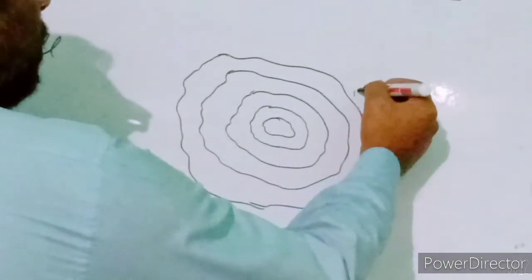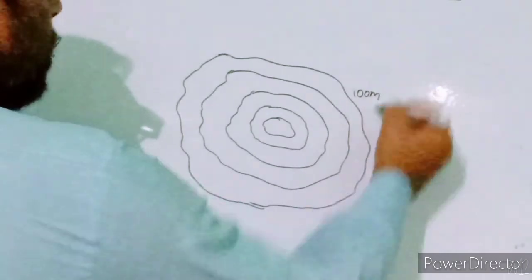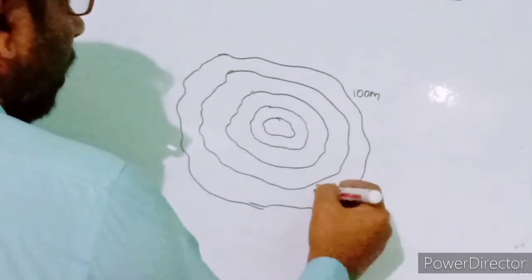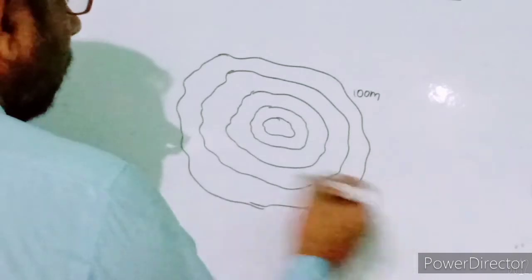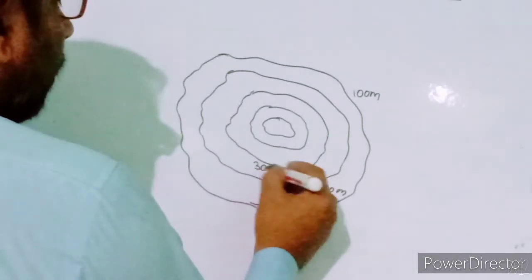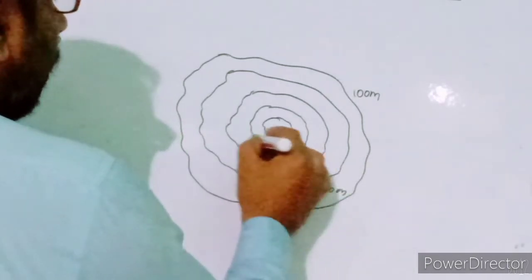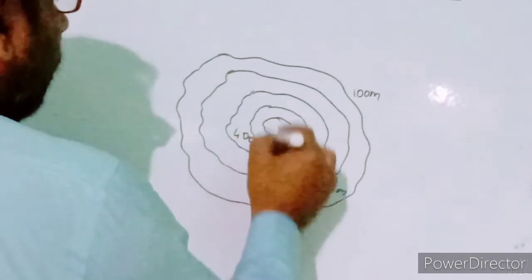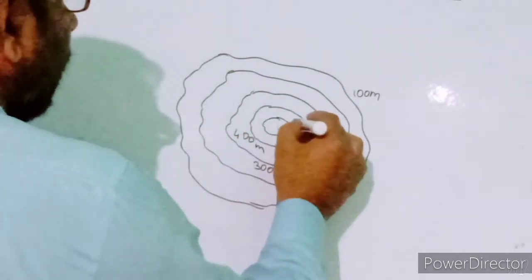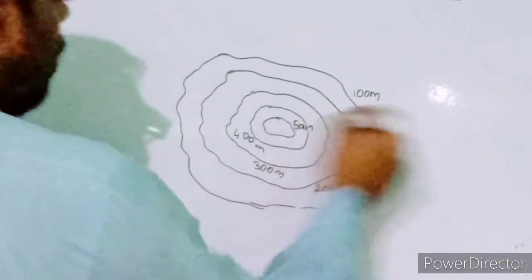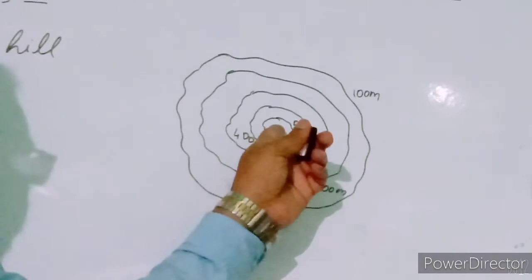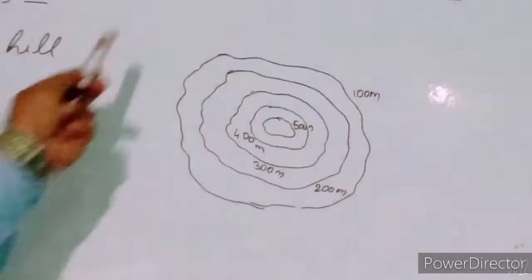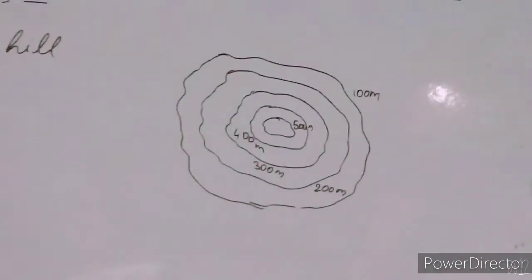The bottom of the relief feature may be 100 meters, second is 200 meters, third is 300 meters, fourth is 400 meters, fifth is 500 meters. From outside, the height is increasing toward the central point. When you draw the cross section, these contour lines will represent the conical hill.